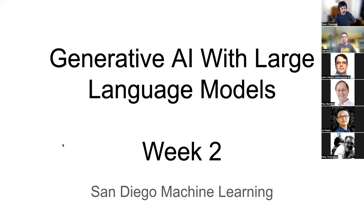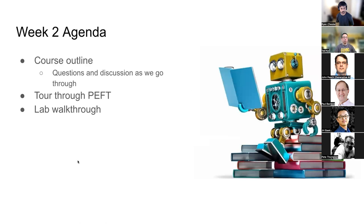Thanks everyone. We've got a big crowd again today, so thanks for coming. This is week two of our pass through the Generative AI with Large Language Models Coursera course. The structure of what we're trying to do today: the assumption is that you've actually done week two on your own, so I won't be reteaching it. It will just be kind of discussion — we can take a little bit deeper on things, maybe you didn't understand something, or wanted more discussion around why X is better than Y. So that's the point of this session: not necessarily a reteaching, just a forum so we can discuss these topics and exchange notes.